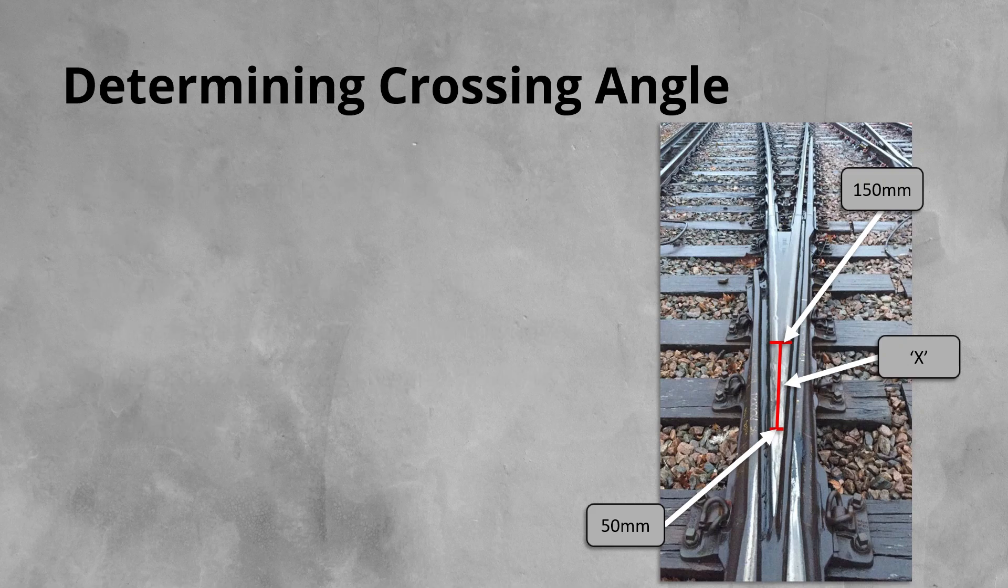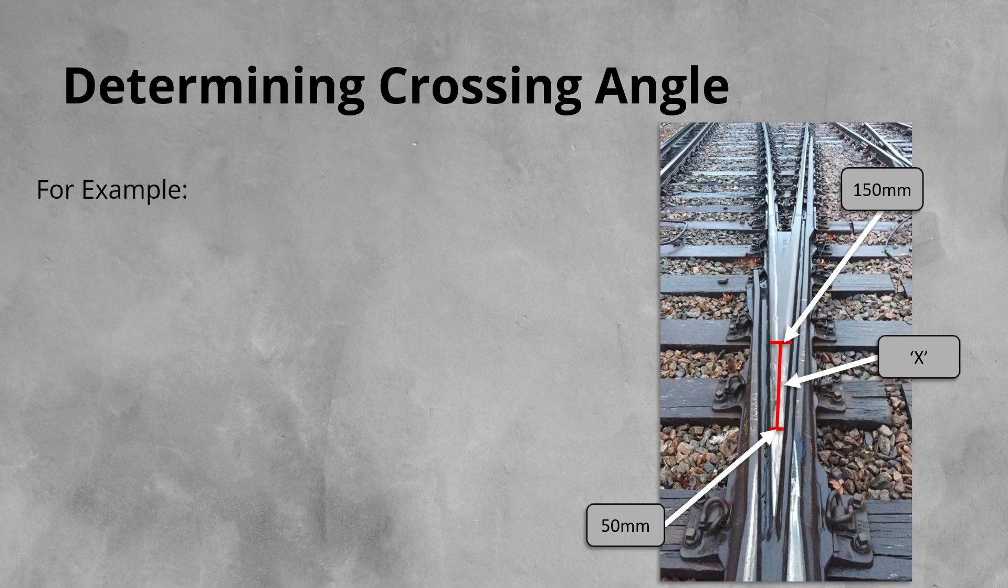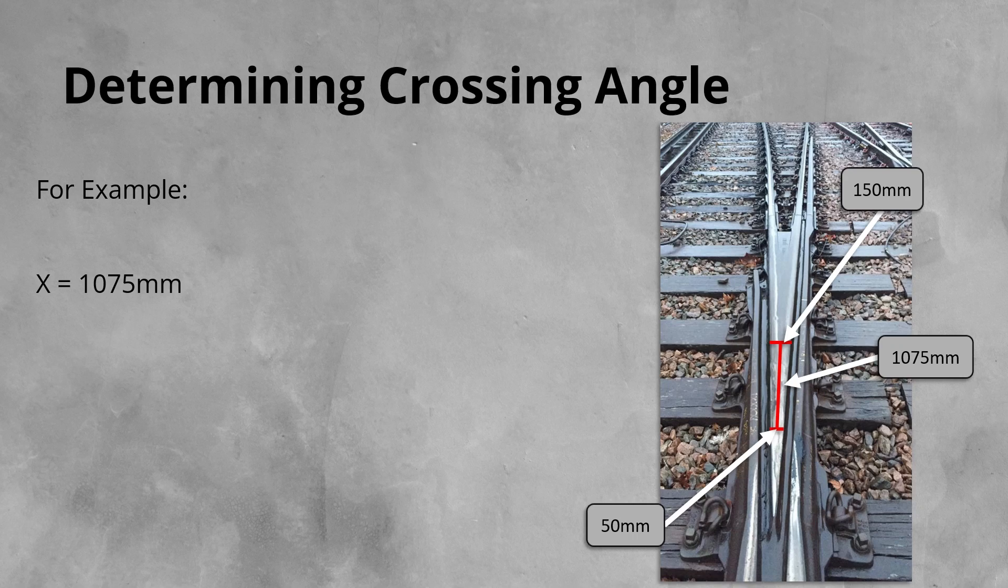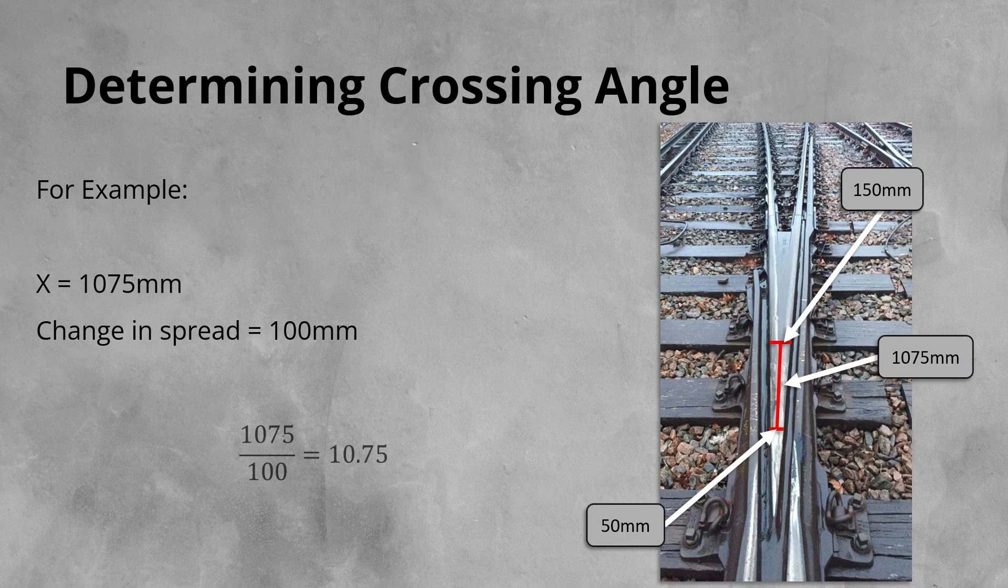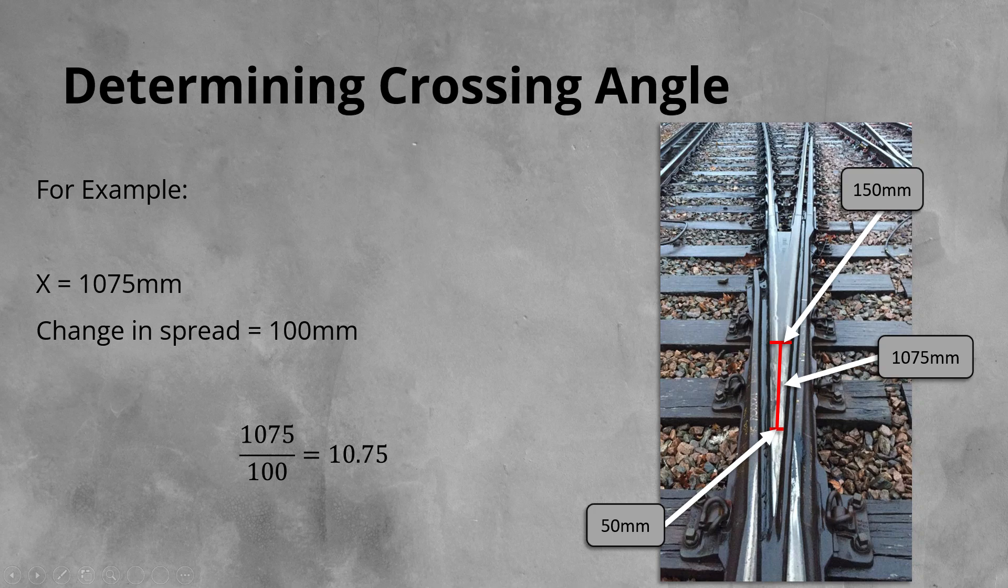For this example, let's say that the distance between our two marks, X, is 1075mm. The change in spread of the legs is 100mm. 1075 divided by 100 gives us 10.75. Therefore this crossing has an angle of 1 in 10.75.